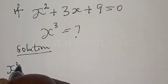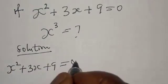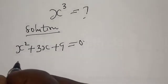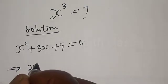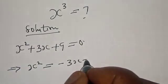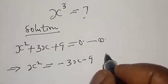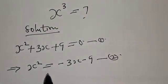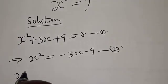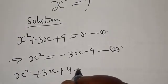Solution. We have s squared plus 3s plus 9 is equal to 0. This implies that s squared will be equal to minus 3s minus 9. Let's call this equation 1. And equation 2 is s squared plus 3s plus 9 equal to 0.